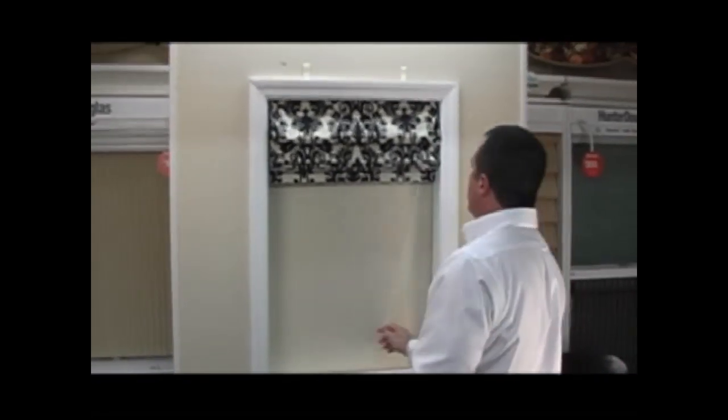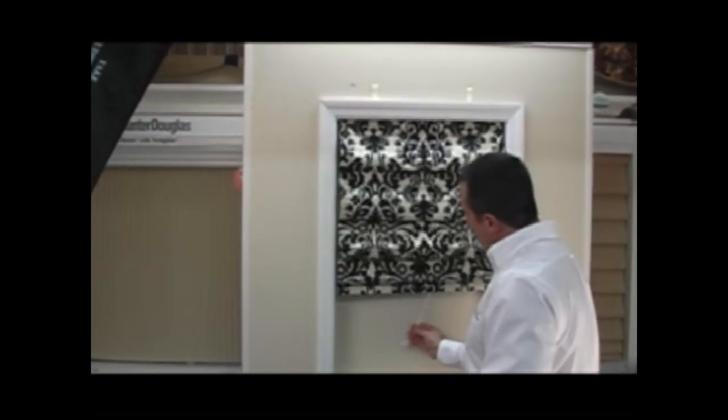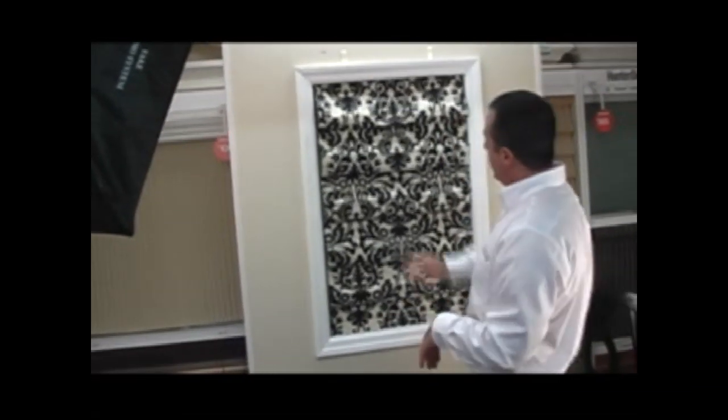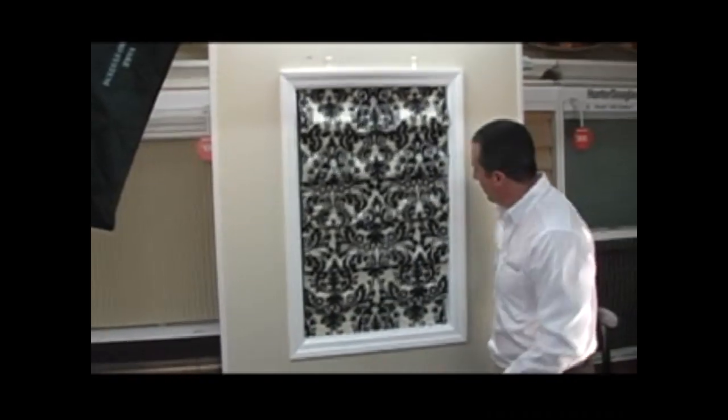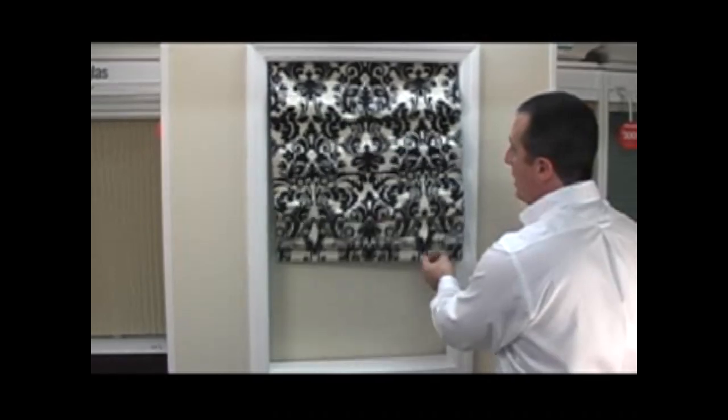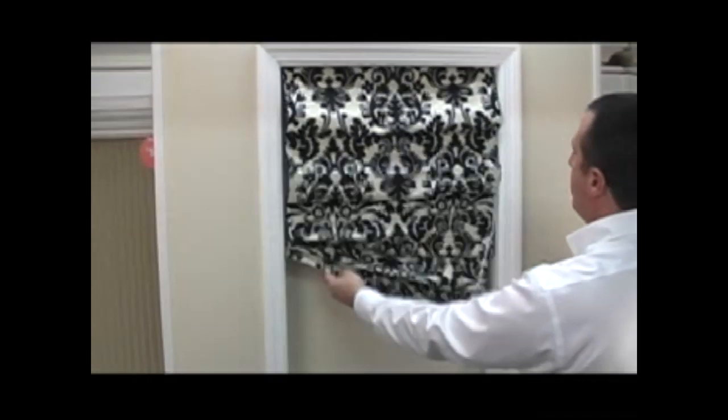Okay so once you have that mounted into the window frame you can bring the shade down by simply moving the cord over to the left. That'll release the cord lock and your shade fits perfectly inside the window. Now remember this is the standard operation where you will have to reach behind the shade in order to lift the shade up and down.